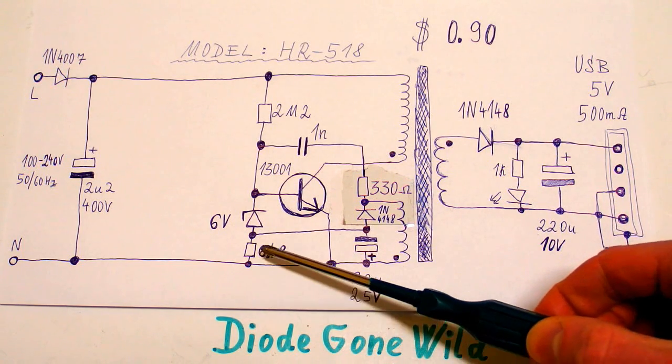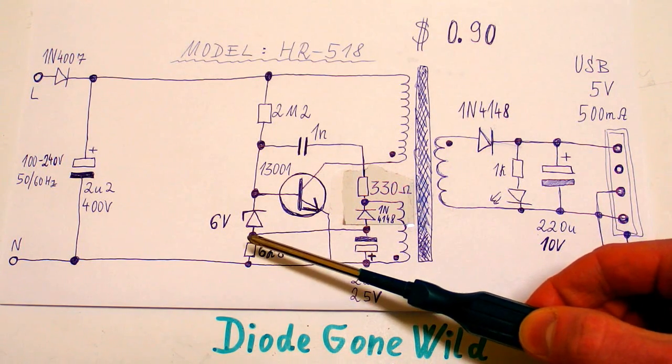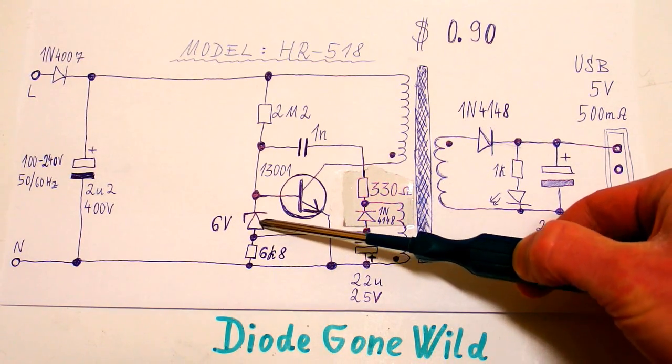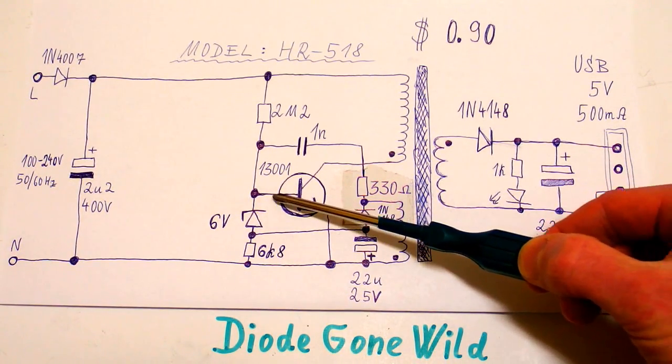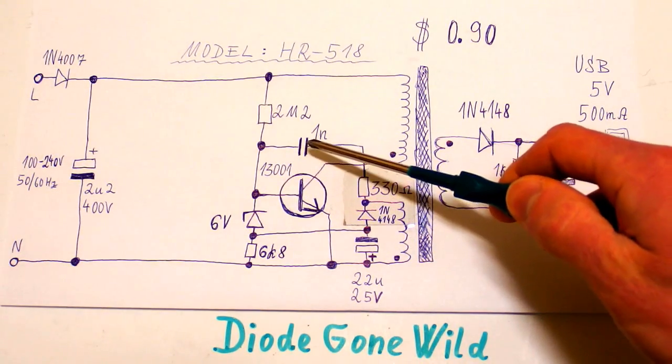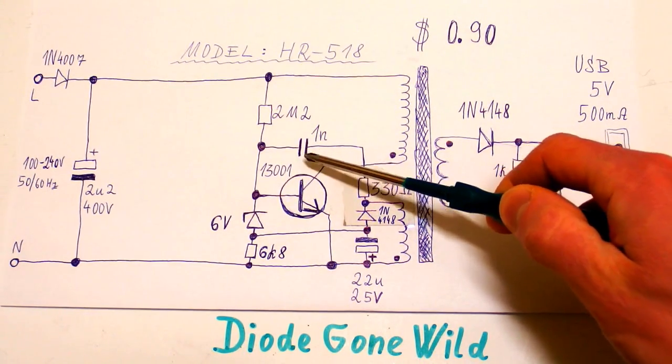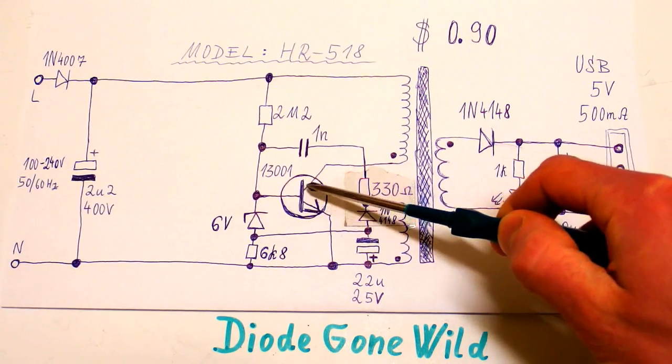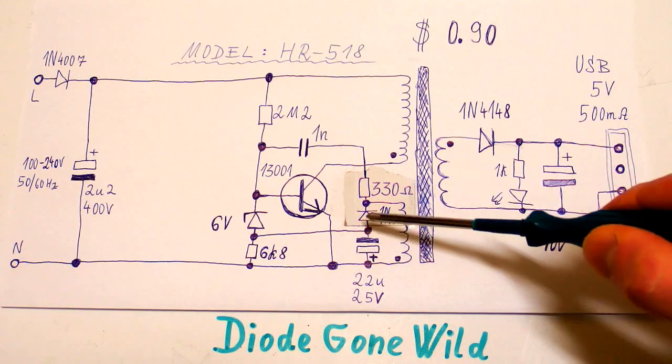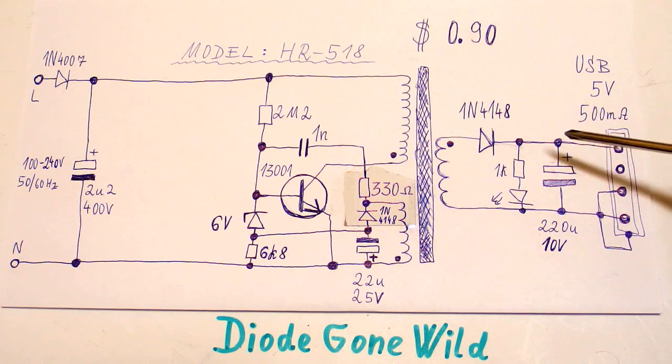And when the negative voltage reaches about minus six volts, this zener diode will start to conduct and steal some current from the base of the transistor and it will help to discharge this capacitor faster so the transistor will stay opened for shorter time.